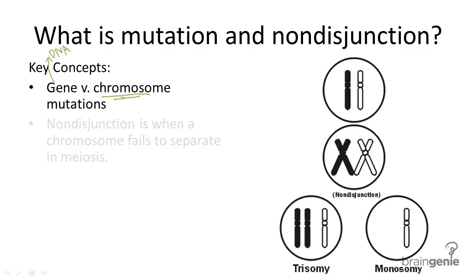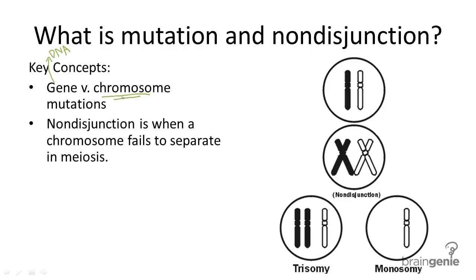Chromosome mutations are generally much more serious because they involve a lot more genetic information — we're talking about either missing a piece of a chromosome or having an entire extra chromosome. These mutations are caused by what we call non-disjunction, which is when chromosomes fail to separate properly during meiosis.